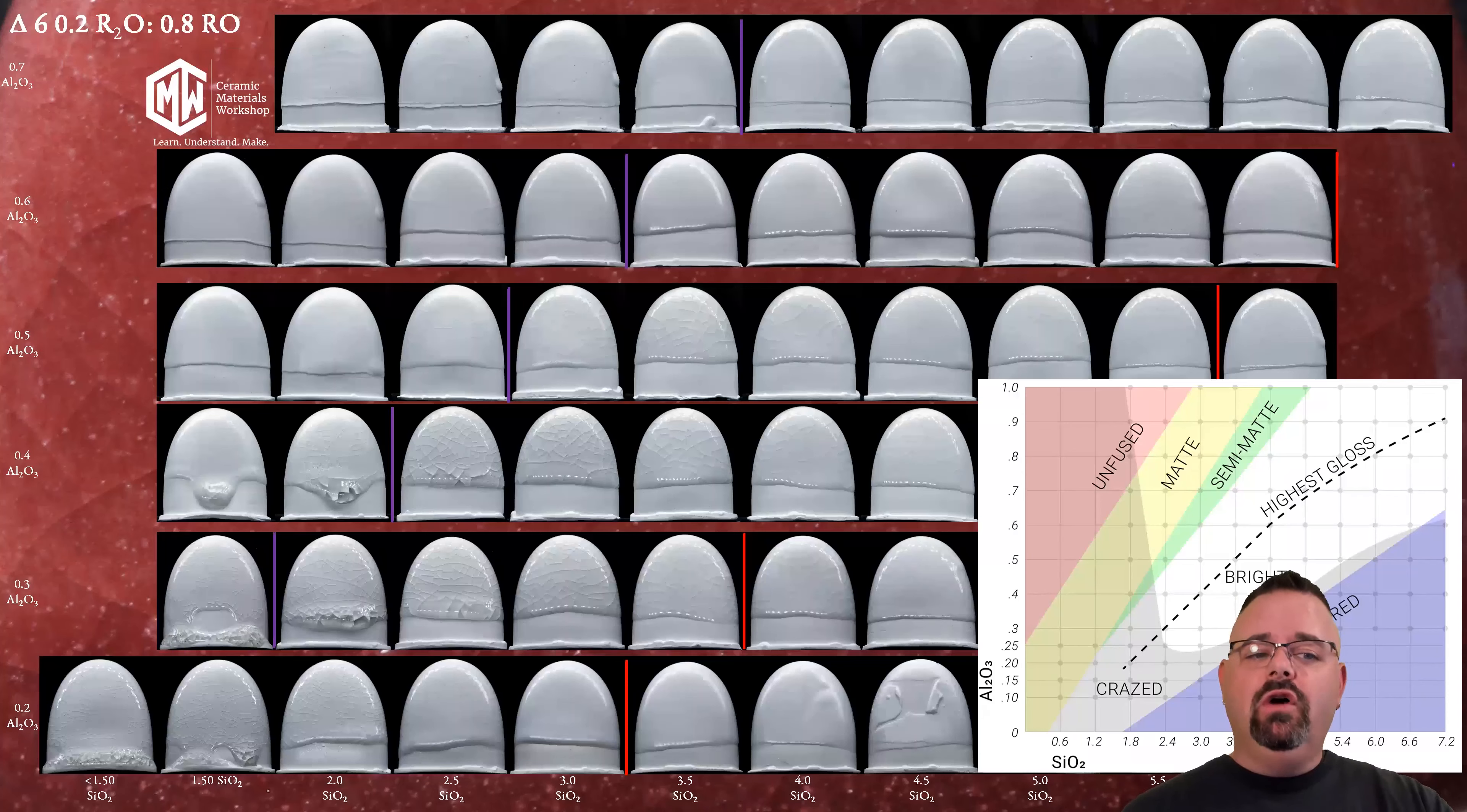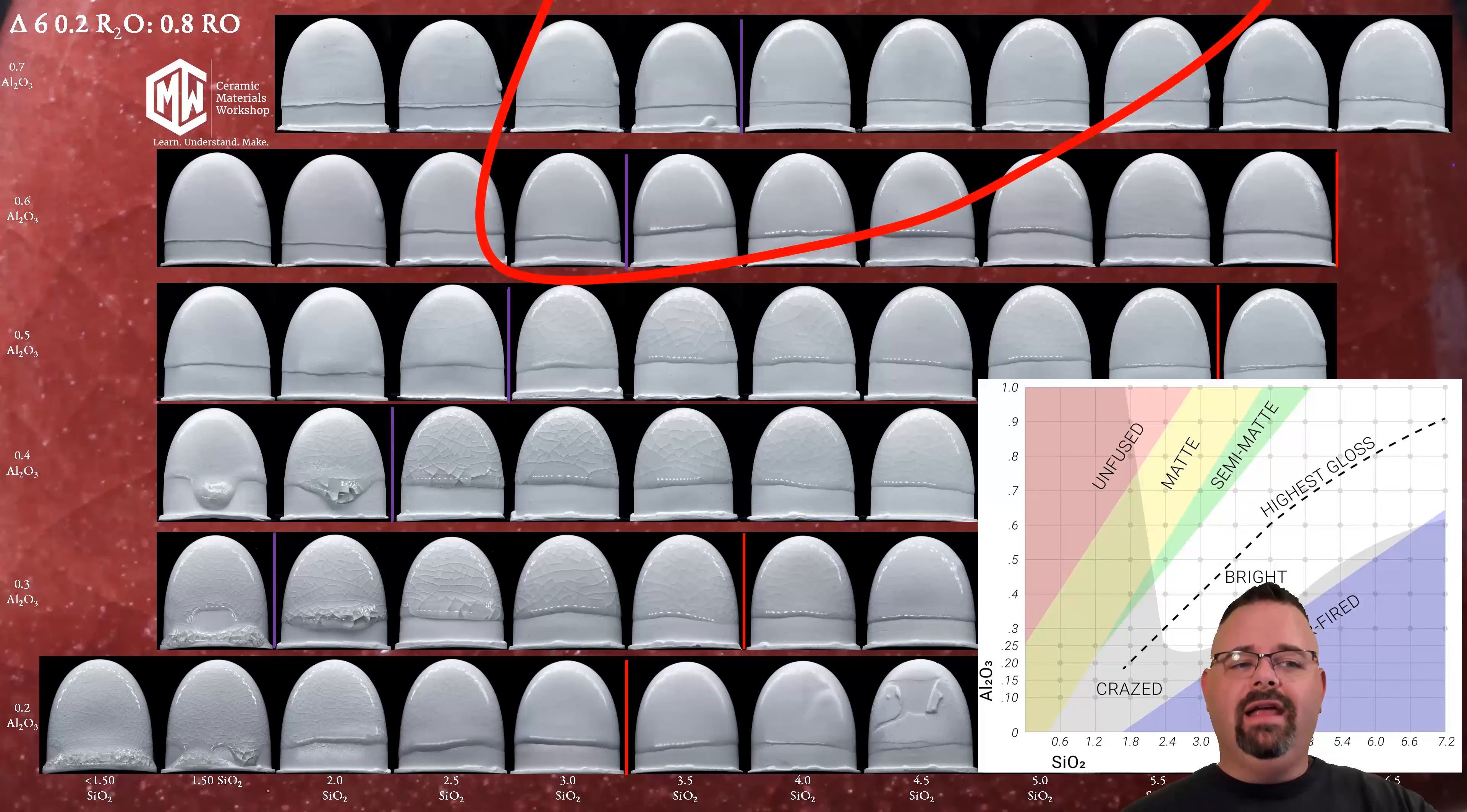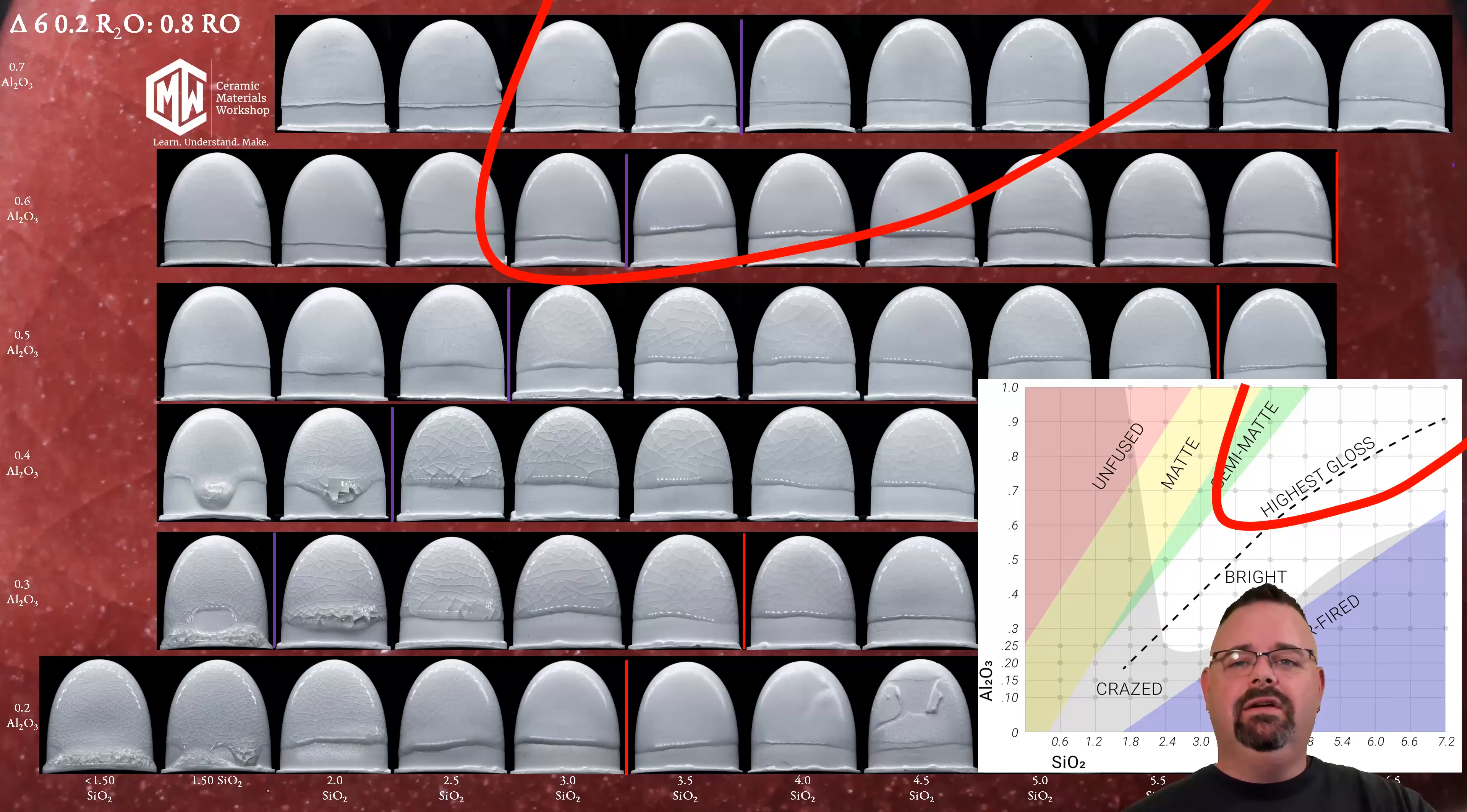Now if you look closely you will see that my crazing region is not in the same space as Stull's crazing region. My crazing region goes much higher on the map. Well that's because the clay body I was using has different thermal expansion than the clay body that Stull used. And so I move up on the map but the shape of the crazing region is still the same. The way the behavior moves throughout the map continues. It's just on my clay body it moves differently.